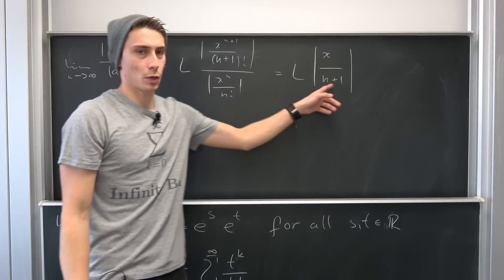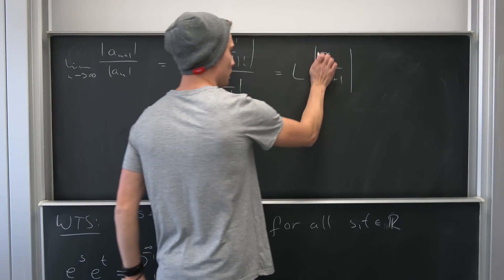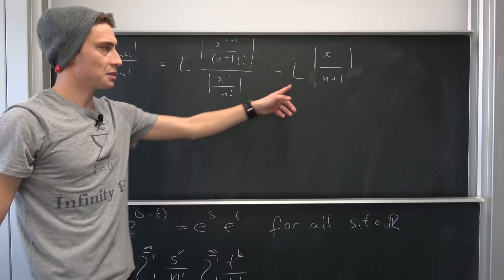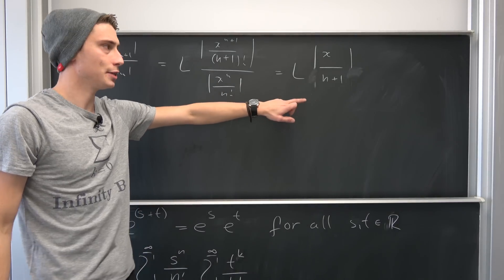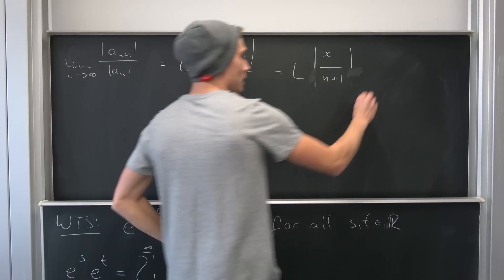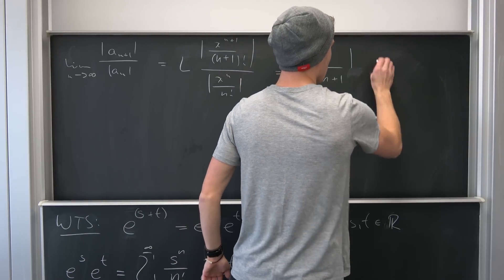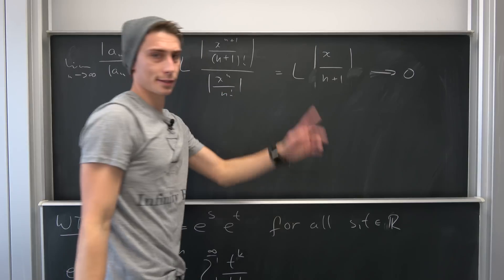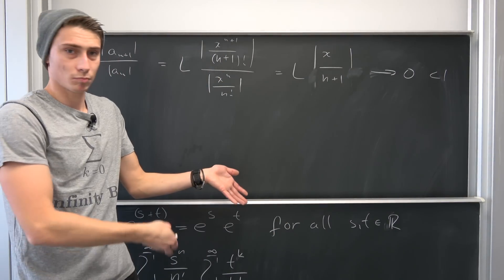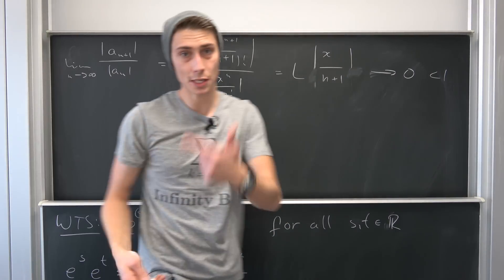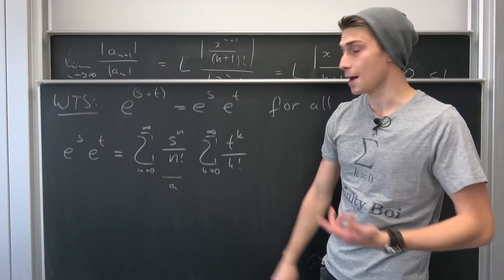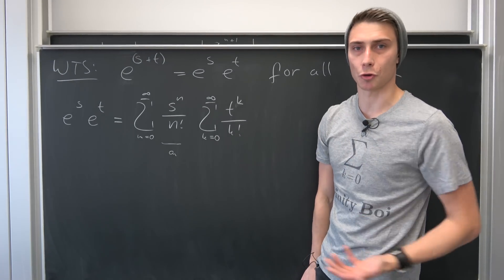Since n plus 1 is strictly positive the absolute value doesn't affect it. Taking the limit as n approaches infinity, this goes to 0 for all values of x. So L equals 0, which is definitely less than 1, meaning both series converge absolutely — so we can use the Cauchy product.